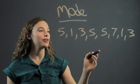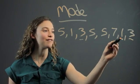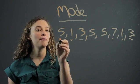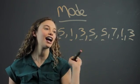Okay, so you can see here we have three occurring twice, we have one occurring twice, we have seven only occurring once, but we have five occurring three times.